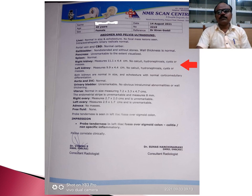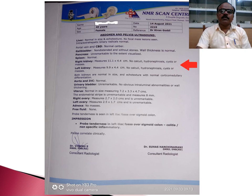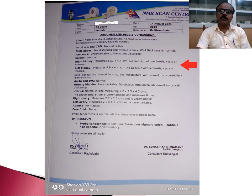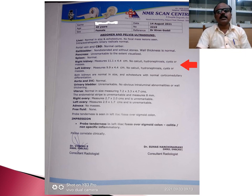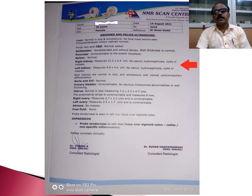The investigation was repeated after about 10 days, on 14th August, and there was no calculi, hydronephrosis, or cysts in the right kidney, and no calculi or adenosis or cysts in the left kidney either. However, this lady had some tenderness in the left iliac fossa or sigmoid colon — colitis — which was a chronic problem mixing with the renal calculi presentation. She was then treated with Natrium Carb based on totality, and the tenderness of the abdomen also disappeared after Natrium Carb.